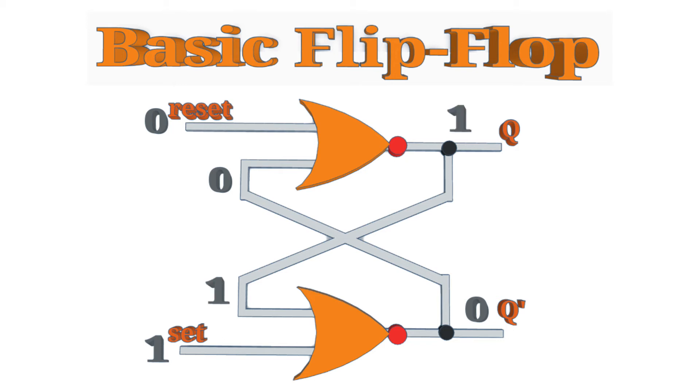So, when the set is taken high, then the Q output is set high, and Q prime is low. Now, if set goes to zero, there is still a one input to the bottom NOR gate from the Q output. Therefore, the condition doesn't change. So, the flip-flop remembers that output.